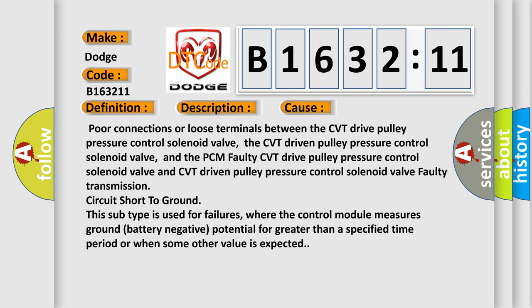This diagnostic error occurs most often in these cases: Poor connections or loose terminals between the CVT drive pulley pressure control solenoid valve, the CVT driven pulley pressure control solenoid valve, and the PCM faulty CVT drive pulley pressure control solenoid valve, and CVT driven pulley pressure control solenoid valve. For example, faulty transmission circuit short to ground. This subtype is used for failures where the control module measures ground battery negative potential for greater than a specified time period or when some other value is expected.